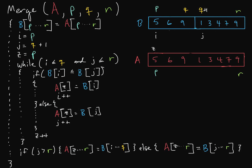What we're doing is checking the first two indices of each side and seeing if the left one is less than or equal to the right one. Is five less than or equal to one? It is not, so we copy the first index of the right side into A. So one gets brought over, and we copy one down.